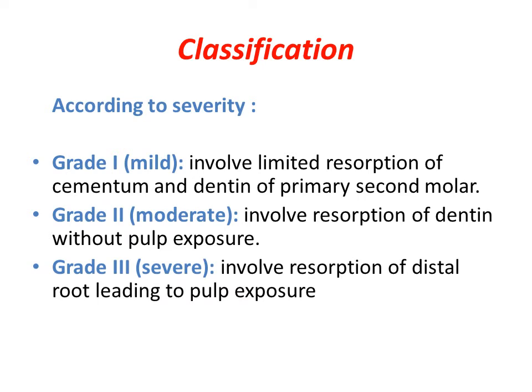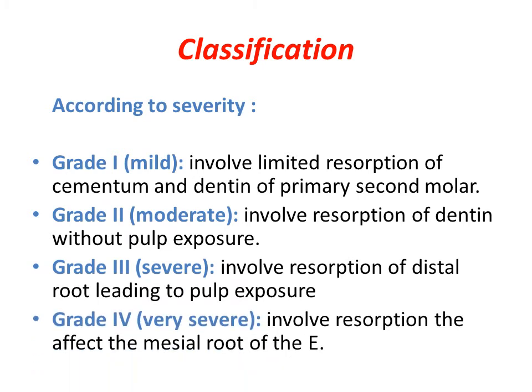In grade 3, the severe form involves resorption with pulp exposure. In grade 4, the very severe form involves resorption that affects the mesial root of the E.